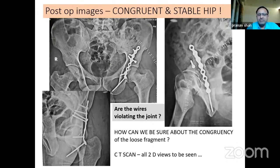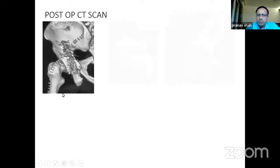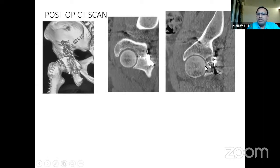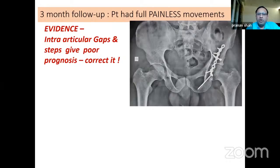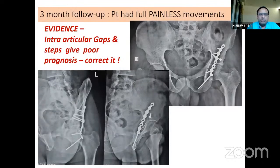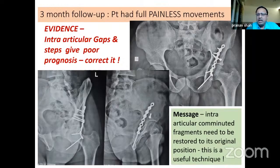This is the final fixation and post-operative x-ray. The head is well reduced and implant position is good. Iliac and obturator views confirm congruence and no loose fragment. The important question is whether these K-wires are violating the joint — if so, they could cause arthritis or chondrolysis. Post-operative CT scan confirms: in 3D view the wall fragment is back in position, and on 2D view the loose fragment is congruently sitting in the hip joint. At three-month follow-up the fracture healed and the patient has full, painless movement. The message: intra-articular gaps and steps have poor prognosis especially in the posterior wall; intra-articular comminuted fragments must be restored to original position, and this K-wire technique is one useful way to achieve that.